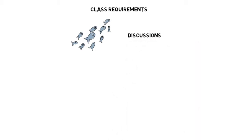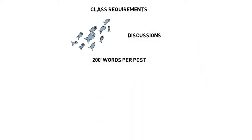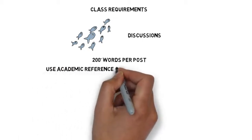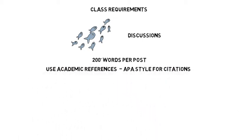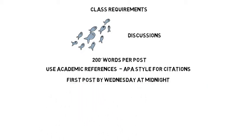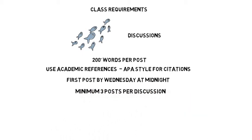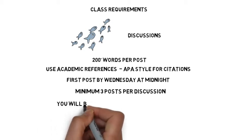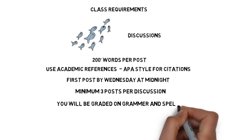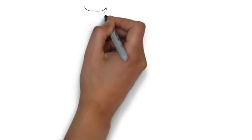Now let's look at specific class requirements. First of all, discussions. Your discussions need to be 200 words per post. Remember those academic references and APA style for citations. Your first post needs to be made by Wednesday at midnight so classmates have time to respond before the discussion closes. You'll need to make three posts per week. Remember to check your grammar and spelling, because I do.